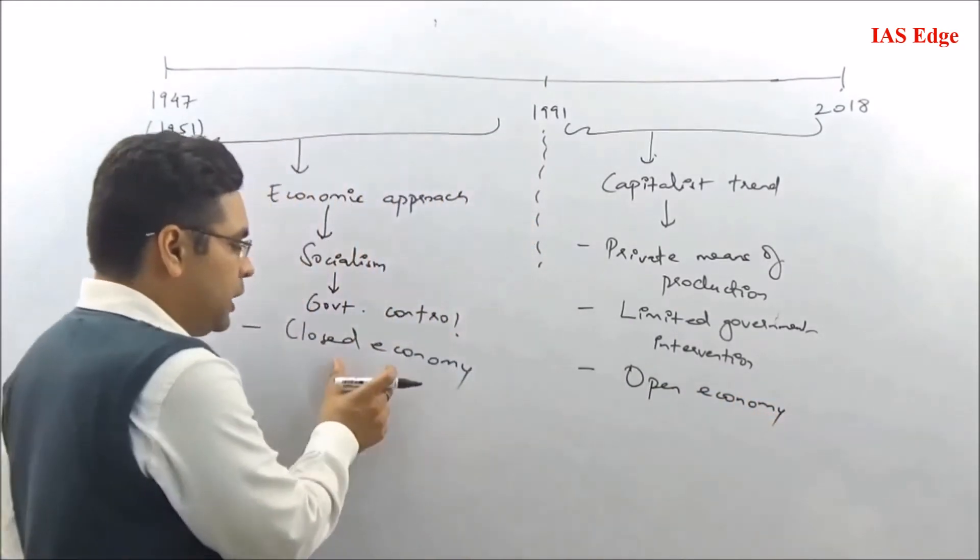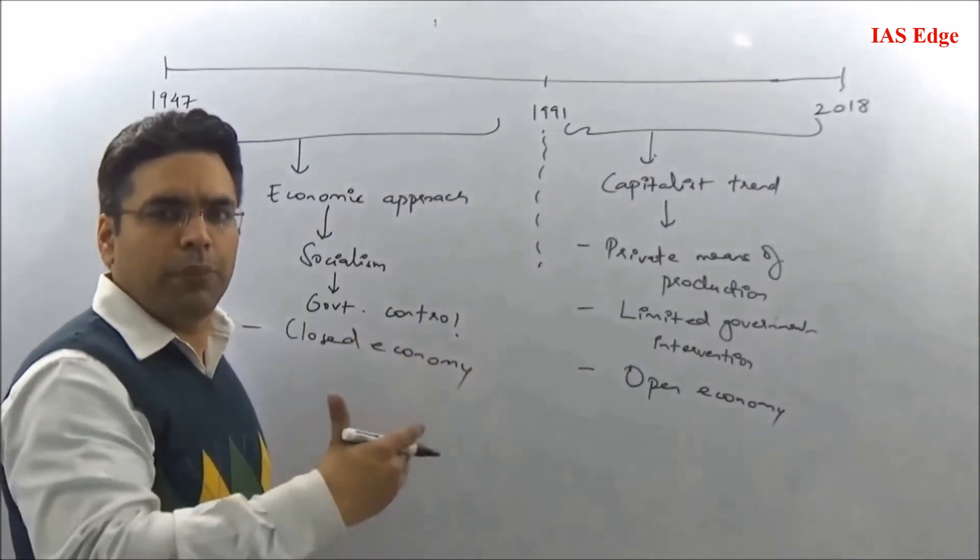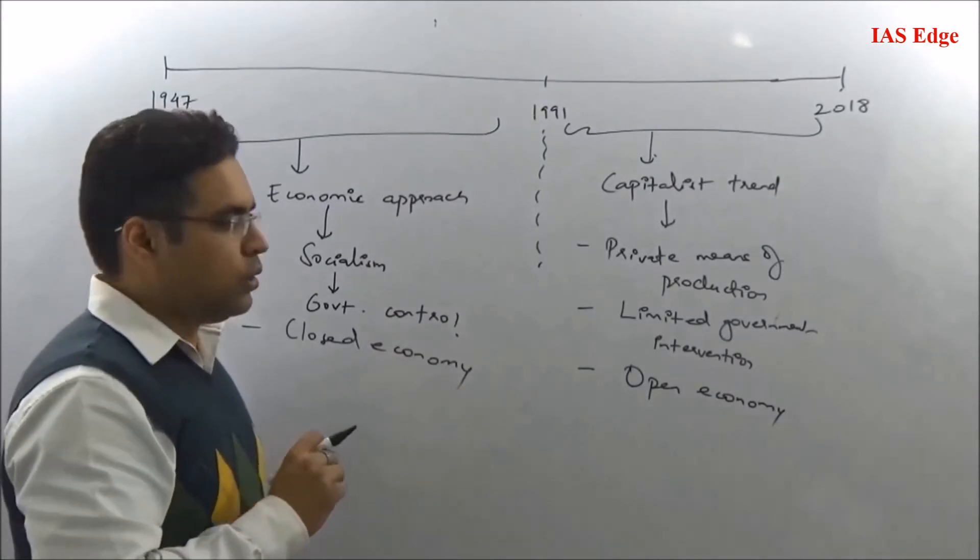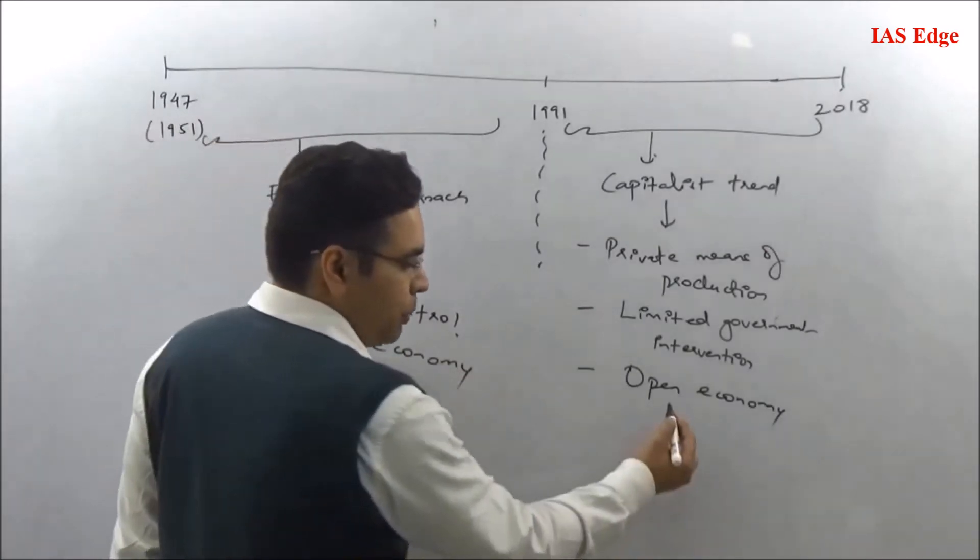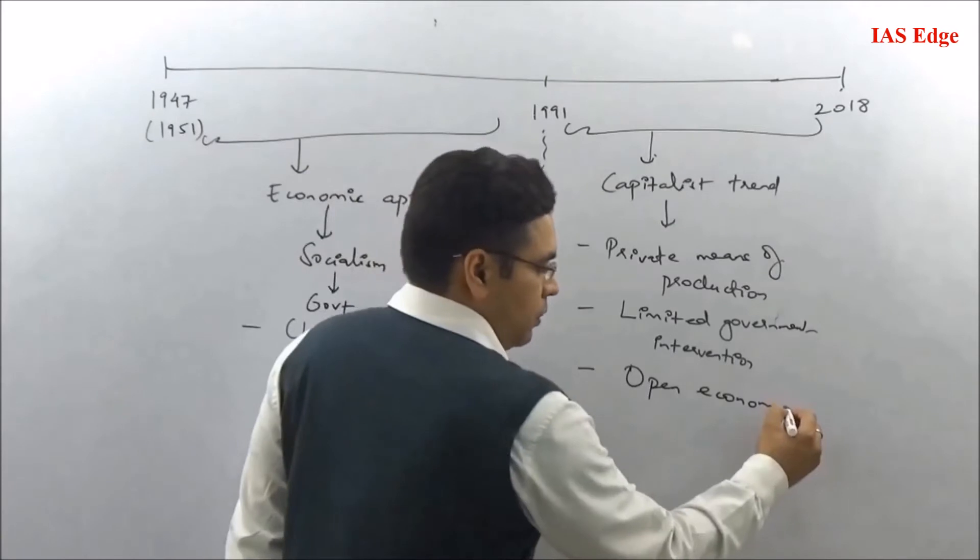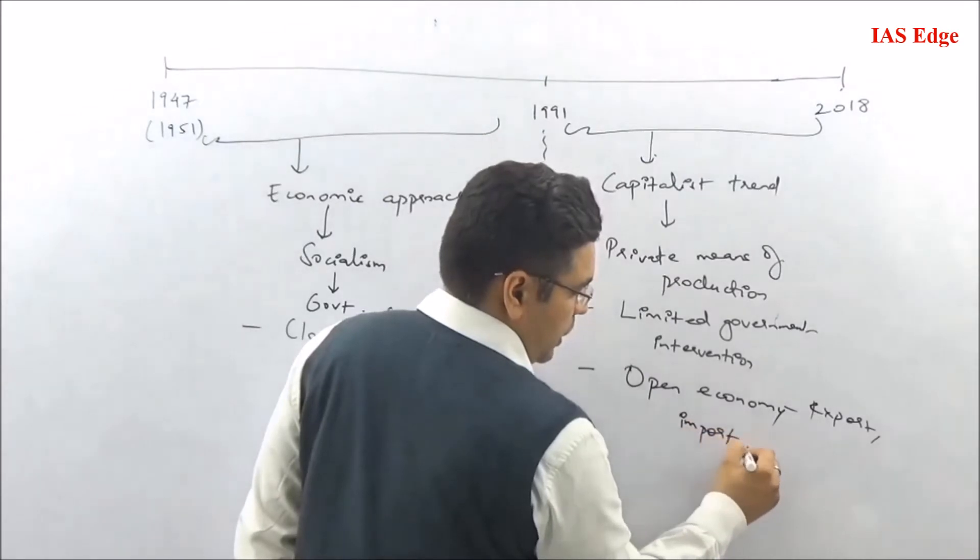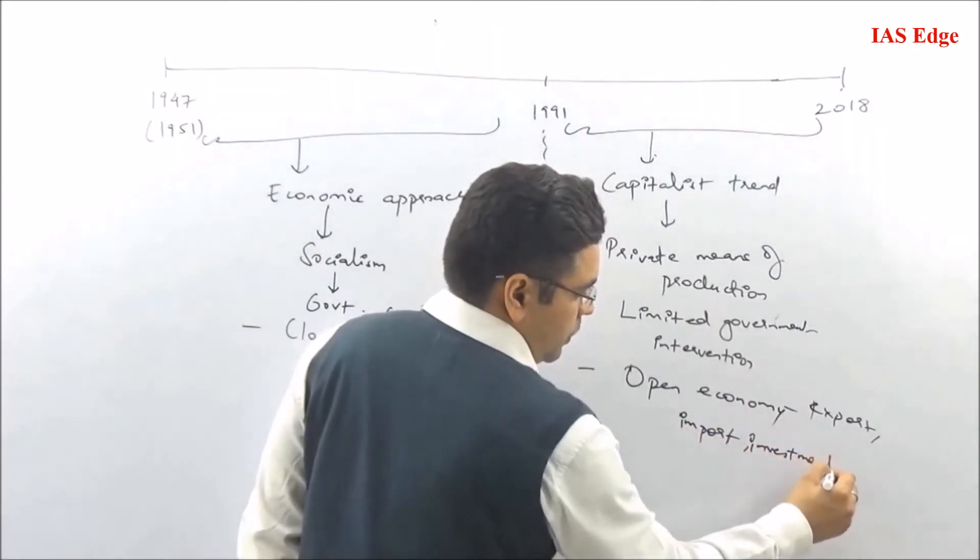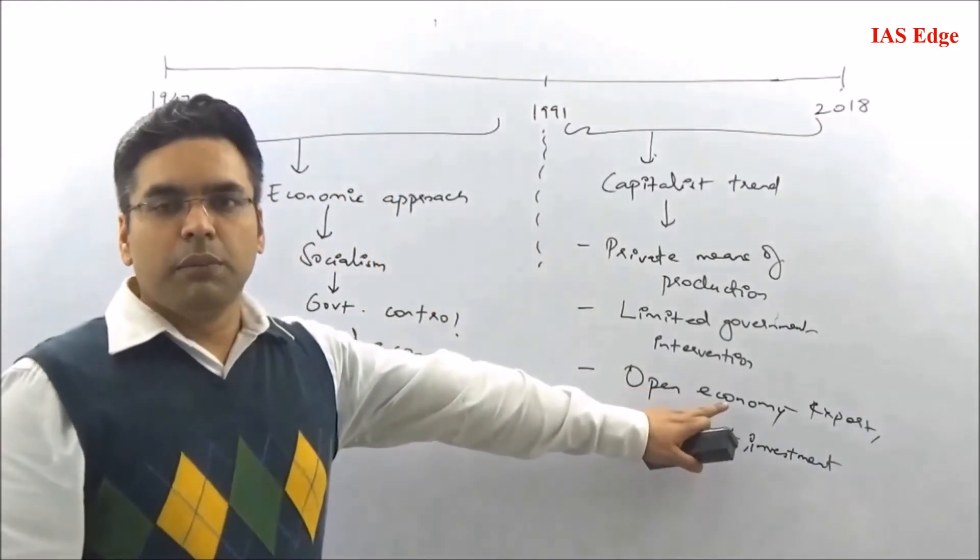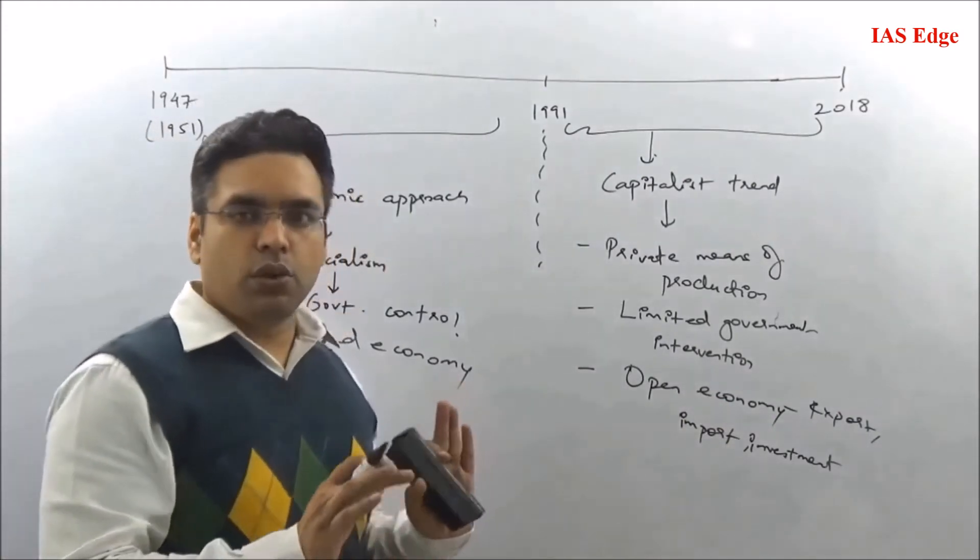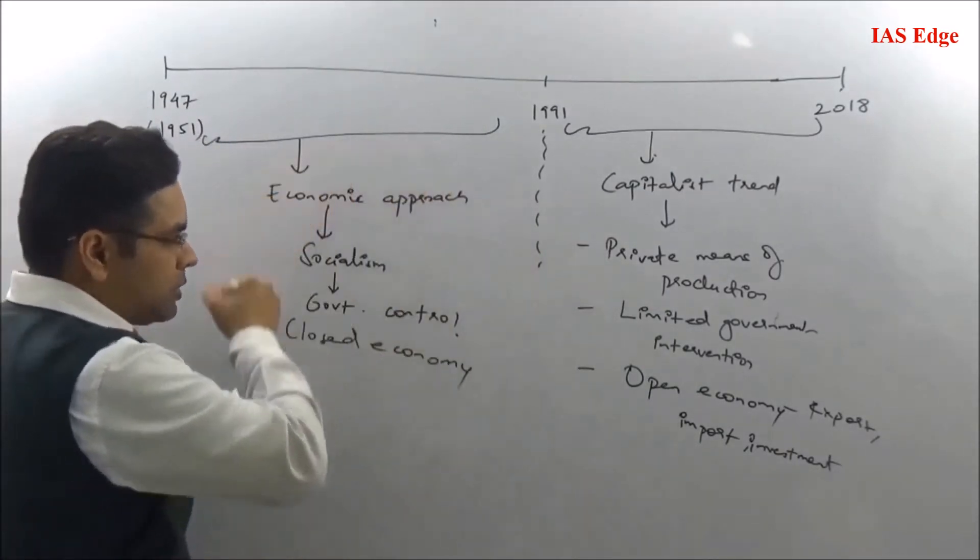In a closed economy, trade beyond the boundaries does not happen, or if it happens, it happens in a limited manner. In an open economy, we have trade which means export import, investment, FDI, FII. In a closed economy, there is no trade, no export, no import.